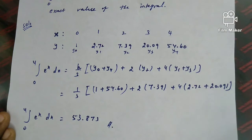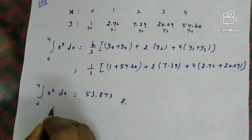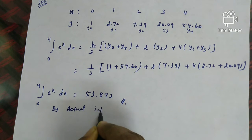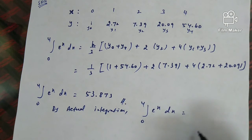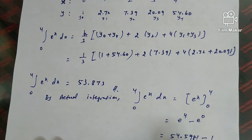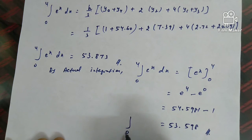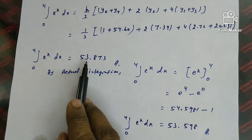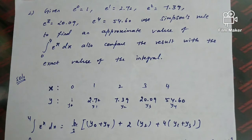Now comparing with the exact value: by actual integration, ∫₀⁴ eˣ dx = e⁴ − e⁰ = 54.5981 − 1 = 53.598. So Simpson's rule gives 53.873 while the exact value is 53.598. This completes the comparison of Simpson's 1/3 rule result with the exact integration.